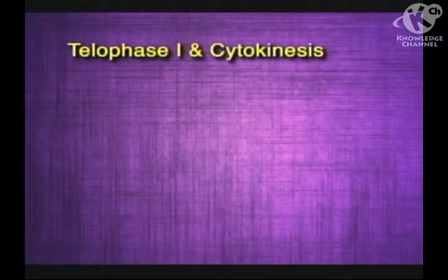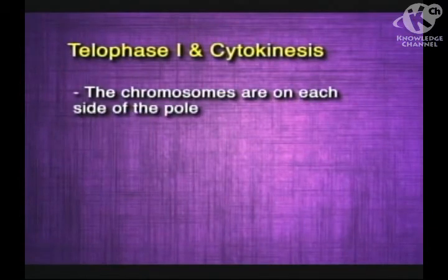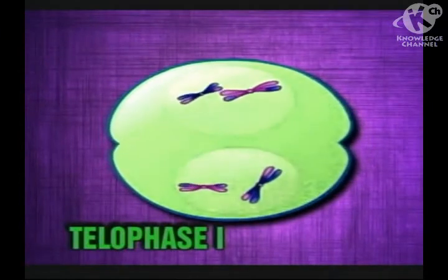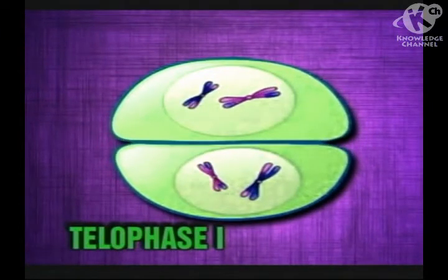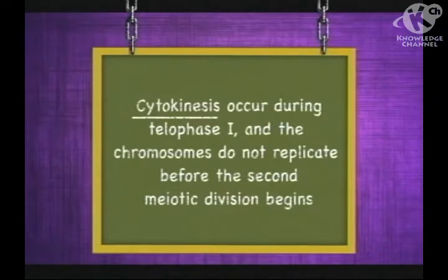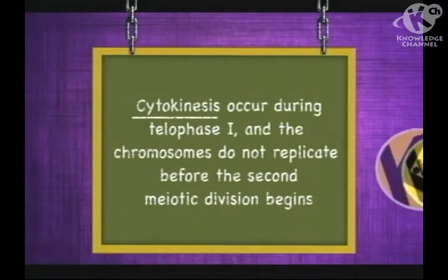During telophase I and cytokinesis, the chromosomes are on each side of the pole and each chromosome still consists of two sister chromatids. In some cells, the chromosomes uncoil, the nuclei and nuclear membrane reappear, and then a pause occurs before meiosis II begins. In other types of cells, the daughter cells produced in the first meiotic division immediately proceed to the second meiotic division. In either case, the chromosomes do not replicate before the second meiotic division begins.